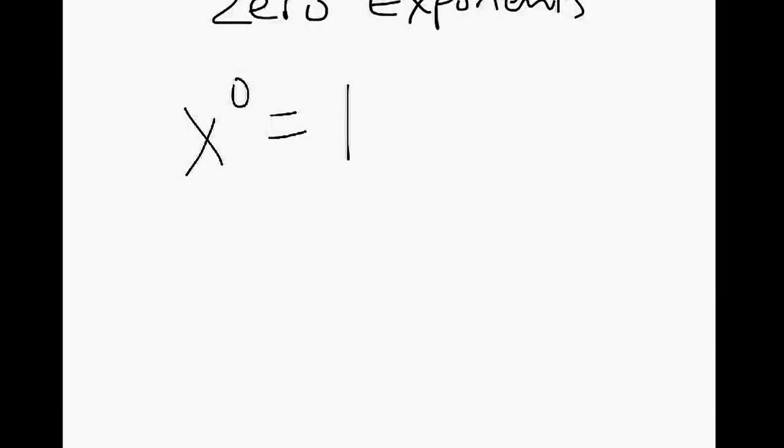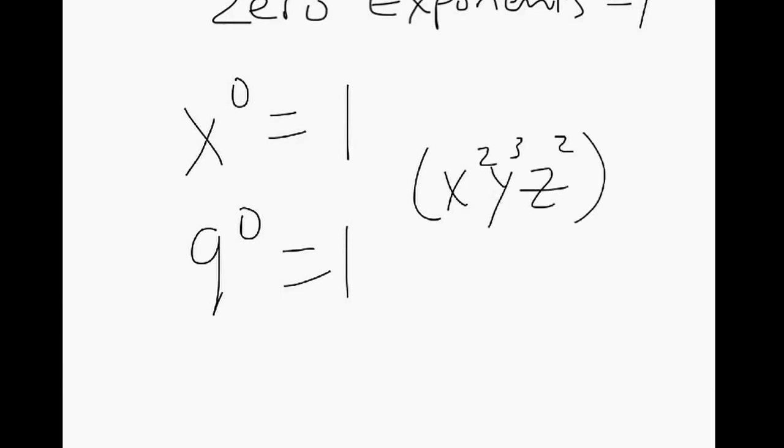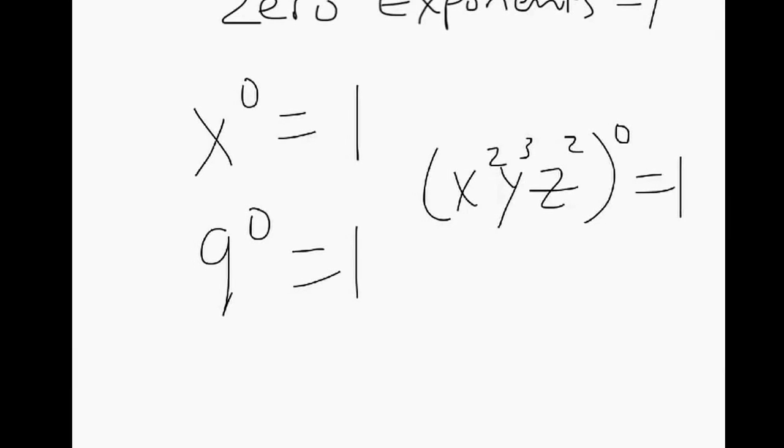Zero exponents. Anything to the zero is one. Everything to the zero is one. So any time you have parentheses, if you have a zero outside of it, that automatically goes to one.